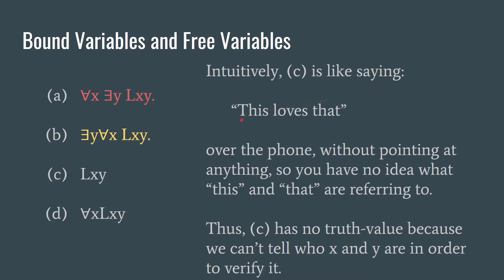Intuitively, C is like saying this loves that over the phone without pointing at anything. So you have no idea what this and that are referring to. So if I just tell you this loves that, you have no way of deciding what this and that are referring to. There's an indeterminacy here. So this doesn't create a sentence that can be true or false. C has no truth value because we have no idea what X and Y are going to stand for. So these are called propositional functions because if we did substitute a name for these, then we could determine a proposition. So suppose we put in for X Ann and for Y Bill, then we have Ann loves Bill, then we have a proposition. So formulas with free variables are called propositional functions because they're functions from the domain of objects to a proposition. If we were to complete this indeterminate proposition by plugging in names, then we would get a proposition fully determined. So this is called a propositional function.